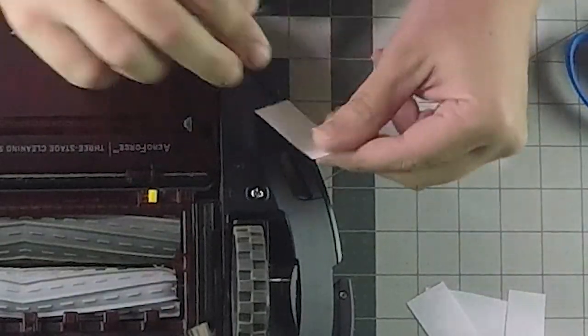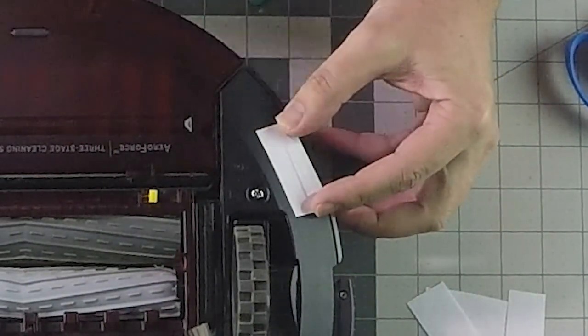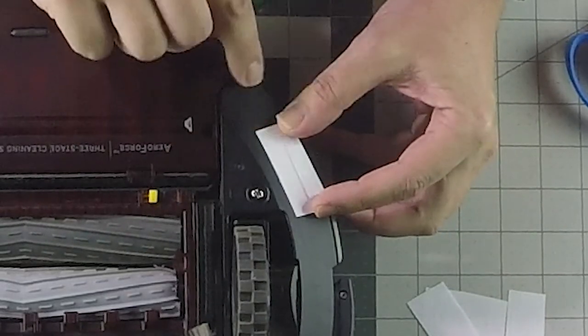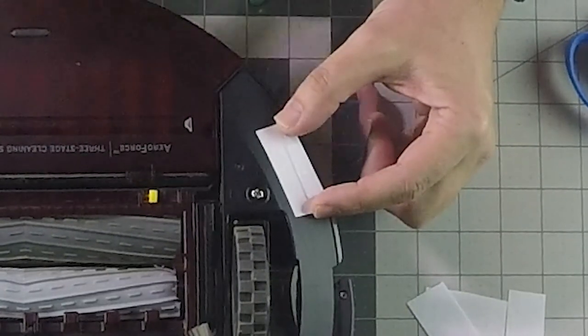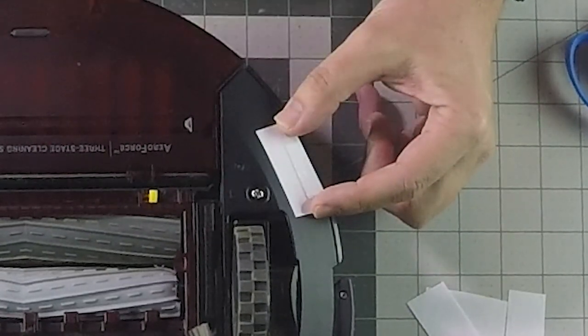All right, once you have your little bits of paper cut, you can use any kind of tape here. You can use scotch tape or something a little thinner to give you a little bit of room there to tape it on the Roomba. But I'm just going to reuse this packing tape.